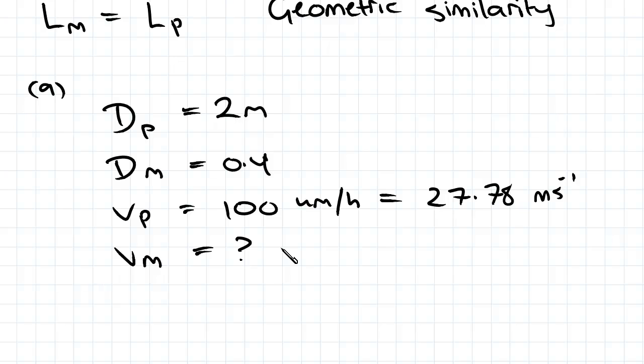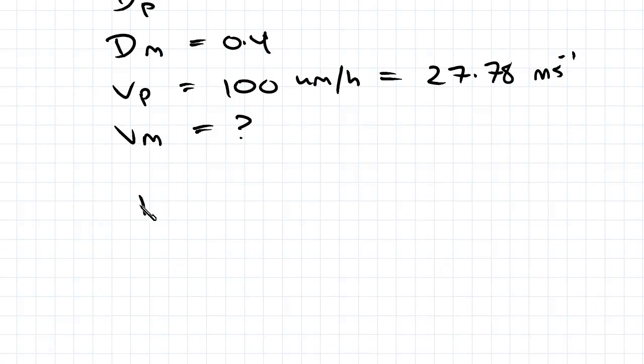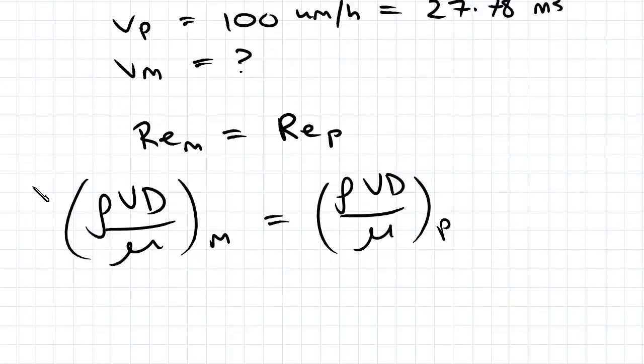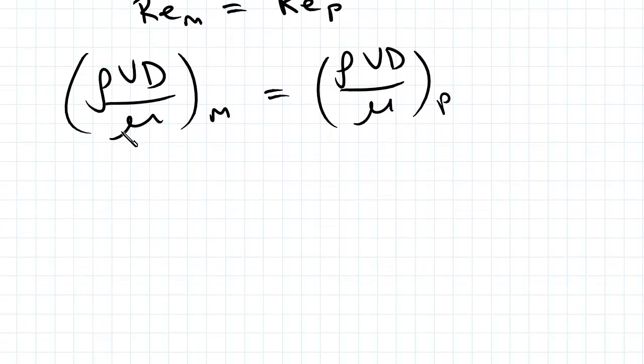So we can quite easily solve that for Vm. If we take RE model equals RE prototype, we have rho Vd over mu M equals rho Vd over mu P. As I said, rho and mu are going to be constants because in the model and the prototype we're going to be using air. So we can cancel those terms out and we'll be left with Vm.